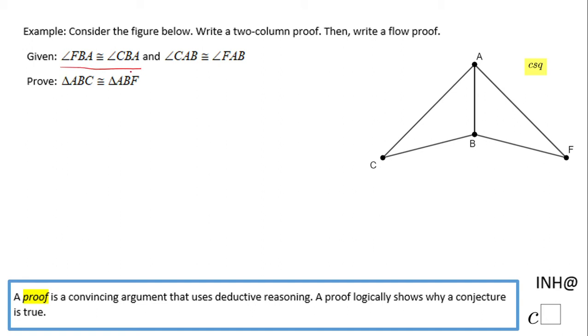Angle FBA is congruent to angle CBA, so this angle here is congruent to this angle. Also, angle CAB, which is this angle marked with two arcs, is congruent to angle FAB, which I'm also marking with two arcs. Now I need to...